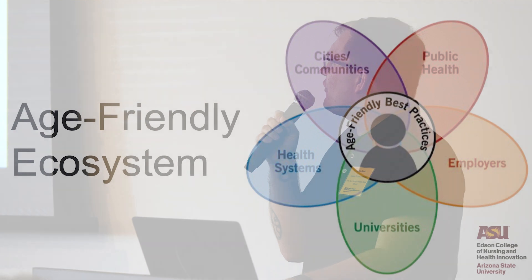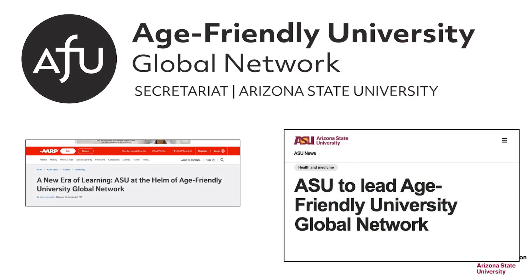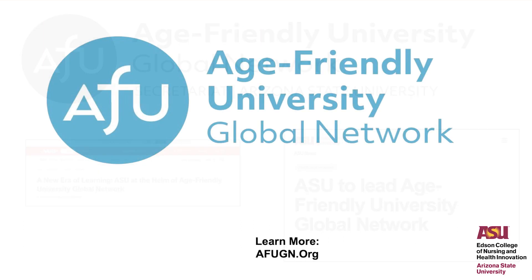About 20 years ago we started the age-friendly ecosystem model, and about 12 years ago ASU, along with international partners, founded the Age-Friendly University Global Network. It has existed for 12 years, and over 110 universities have joined. We're really excited that after 12 years of being housed at Dublin City University in Ireland, as of August the Age-Friendly University Global Network has moved here. We're coordinating these international aging efforts for collective impact to improve engagement of older adults throughout university systems.